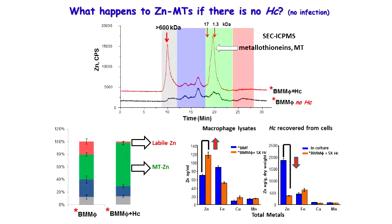What happens to zinc metallothionines if we don't have any of this? We do experiments over and over to prove this in a variety of ways. Here's our ICP-MS with size exclusion; here's our peak at 20 — our metallothionines show up. Activated with the disease, they appear strongly. Activated without the disease, we don't produce much metallothionine. Another way of looking at this is as a bar chart: there is much more free zinc in the case without infection than where we've added the infection to the activated white blood cell.